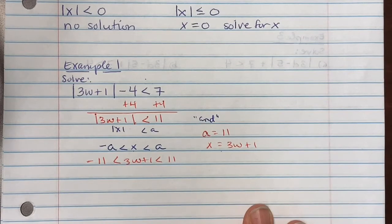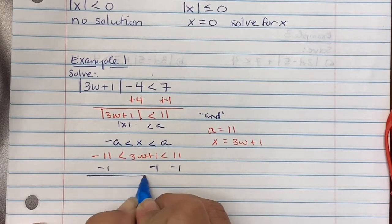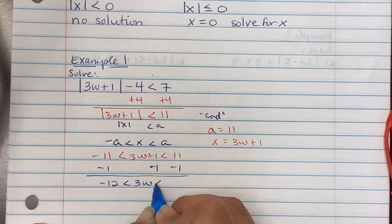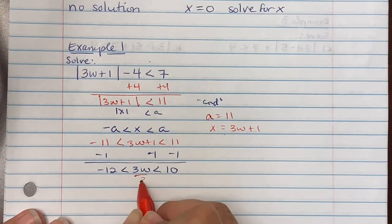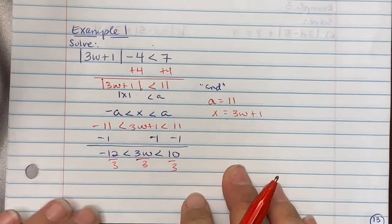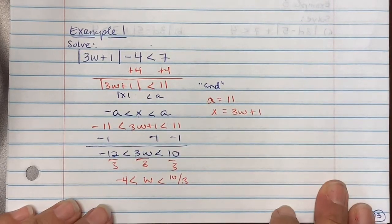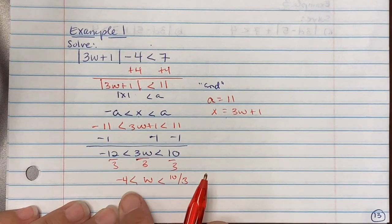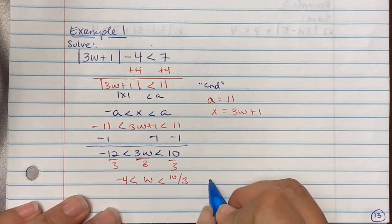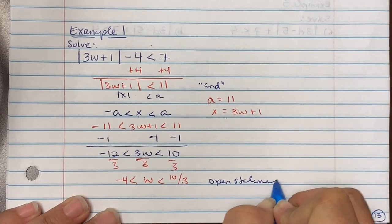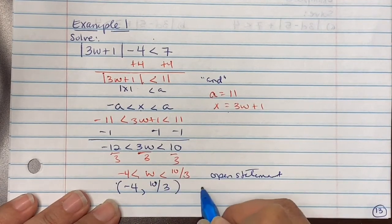This is our 'and' statement. Work from the inside out: subtract 1 from all parts to get negative 12 less than 3w less than 10, then divide all parts by 3, giving negative 4 less than w less than 10/3. Since there is no equal sign, this is an open interval, written in interval notation as (−4, 10/3).